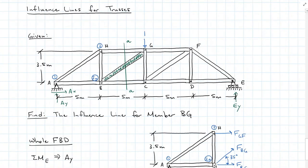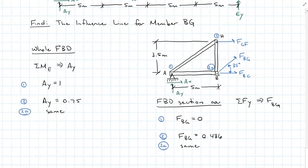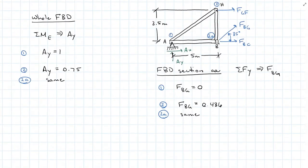Moving our unit load along to joint G and summing moments about E, we find that A_Y is equal to 0.5. Coming to our sectioned free body diagram, force BG, summing forces in the Y direction, comes out to negative 0.872.